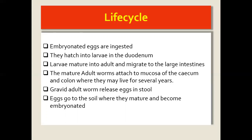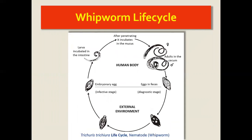Since the adult worms are in the large intestines — where stool formation happens — when the person passes stool, they pass these eggs as well. The eggs must then go to the soil to become embryonated and infective. In summary: embryonated eggs enter the intestines, hatch into larvae, the larvae become adults and penetrate the mucosa of the cecum and colon. The gravid worm releases eggs, the eggs pass with feces, go to the soil to become embryonated, and then they become infective.